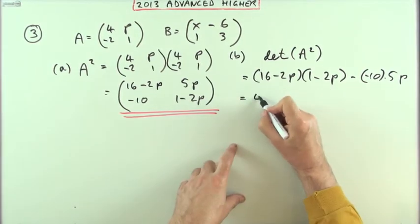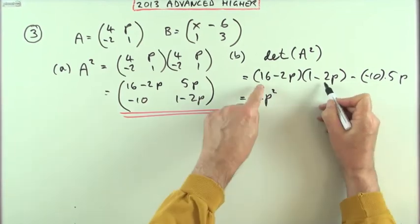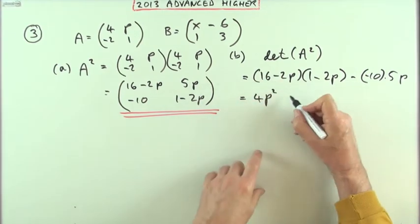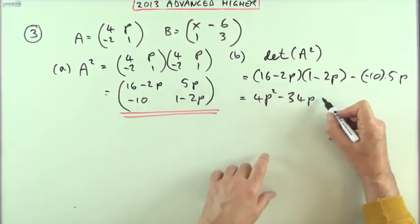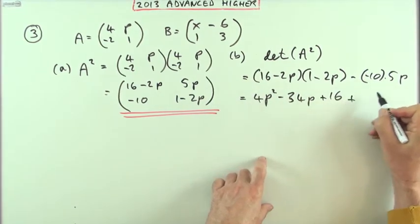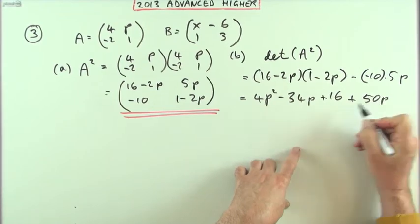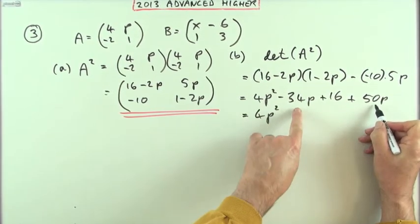Multiplying that out, I've got 4p squared, and that's positive so I'll put it to the front, minus 32 and minus 2 is minus 34p, plus 16 and plus 16 plus 50p. Tidy that up and I'll have 16 overall for the p, plus 16.